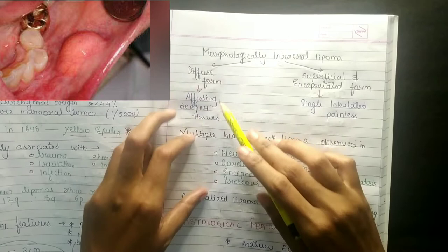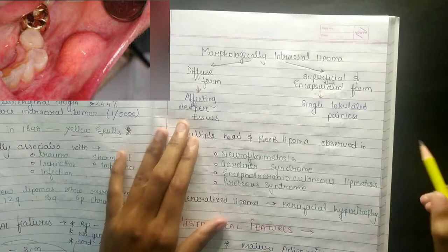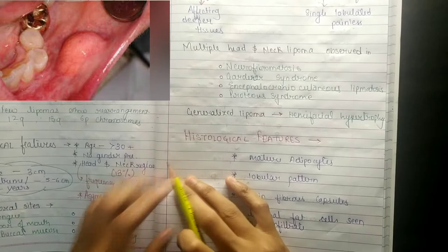Morphologically, intraoral lipomas are divided into forms: the diffuse form, which affects the deeper tissues; the superficial form; and the encapsulated form. They are typically single, lobulated, and painless.